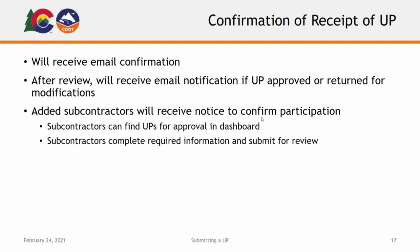If you are notified of necessary modifications, you will have two calendar days to complete and submit those modifications. Subcontractors added to your utilization plan will receive a notification that they need to confirm their inclusion on the project. Subcontractors needing to confirm your utilization plan can find them on their dashboard on their B2G Now home page under the Utilization Plan section. Subcontractors will complete the required information in the bottom portion of the Form 1415 and submit their confirmation for review.